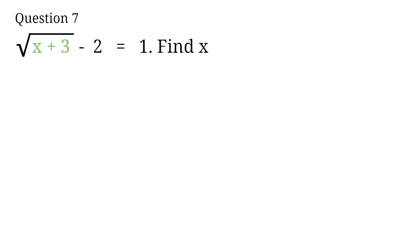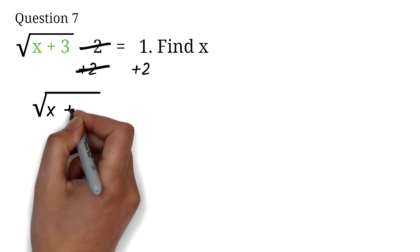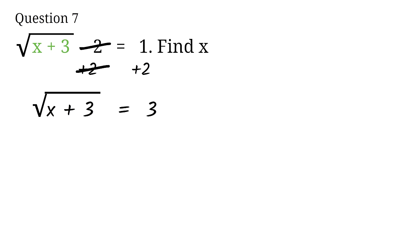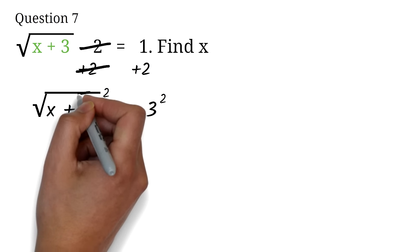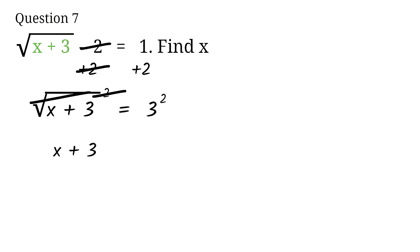Question 7: Square root of x plus 3, minus 2, equals 1. Find x. We are looking at radical equations — equations where the variable is inside a radical or root sign. Similar to absolute value equations, we want to isolate the radical on one side. We add 2 to both sides — the 2 cancels out, and 1 plus 2 gives us 3. Now we have the square root of x plus 3 equals 3. We eliminate the square root by squaring both sides. The square root cancels out, giving us x plus 3. 3 squared is 9. We subtract 3 from both sides — 9 minus 3 is 6. Therefore, x equals 6.